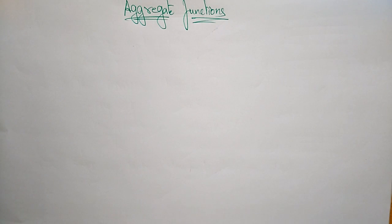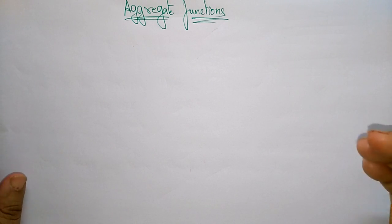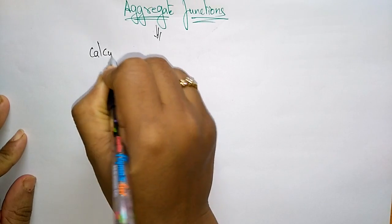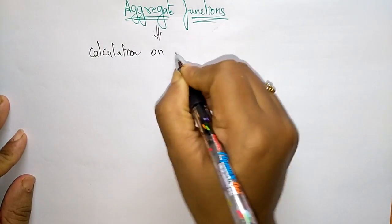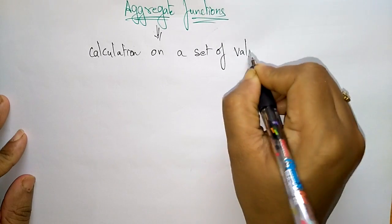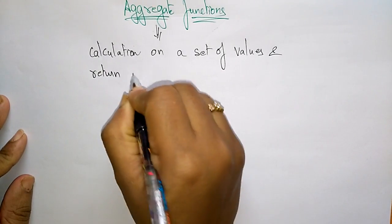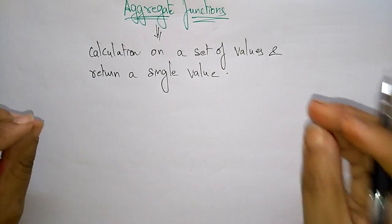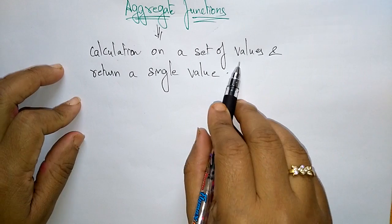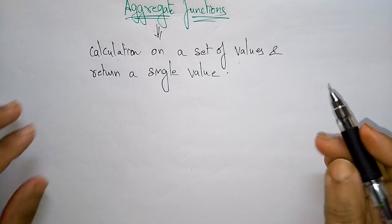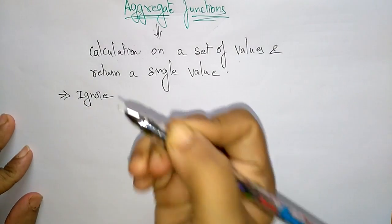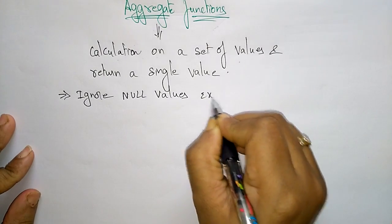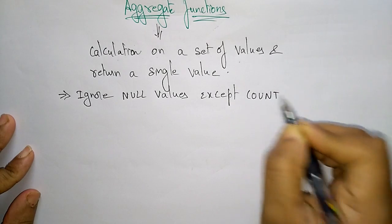Coming to the next topic in database management system: aggregate functions. Aggregate functions are calculations on a set of values that return a single value. Any function that calculates on a set of values and returns a single value as a result is called an aggregate function. Aggregate functions ignore null values, except COUNT.